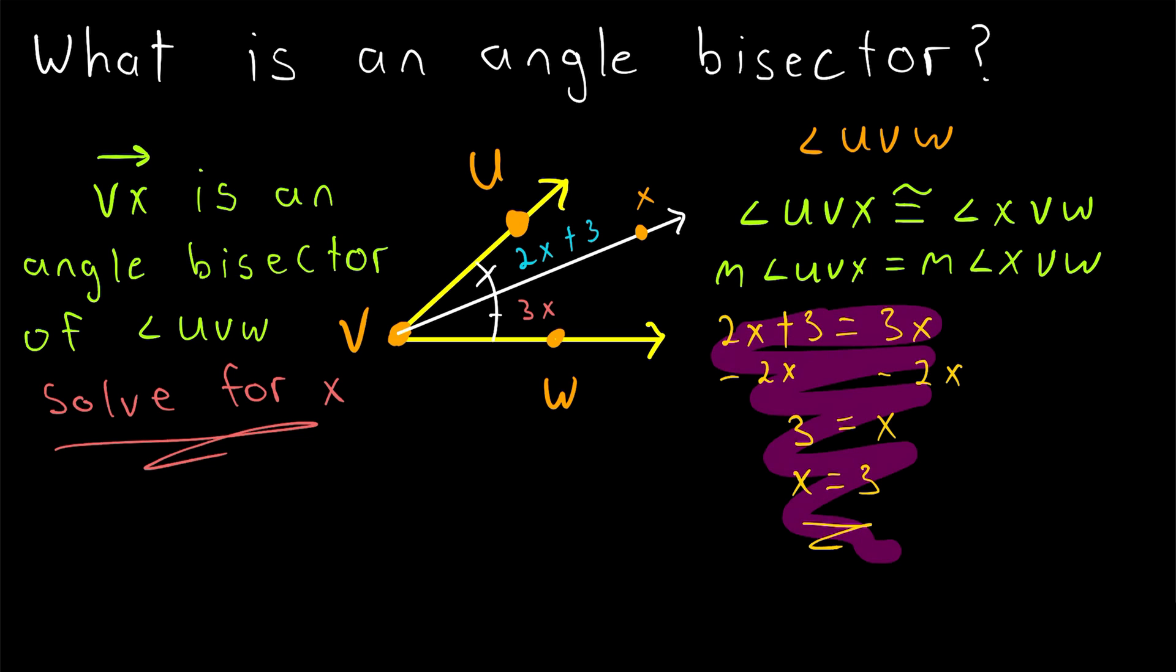And of course, this only works if we know that the ray VX bisects this angle. Otherwise, we have no way of knowing that the measure of this angle, 2X plus 3, is equal to the measure of this angle, 3X.